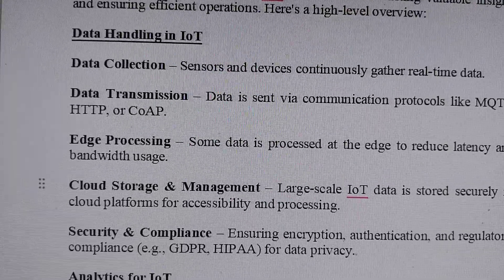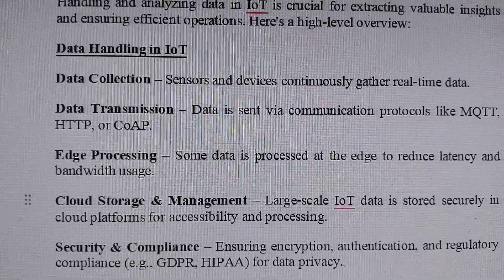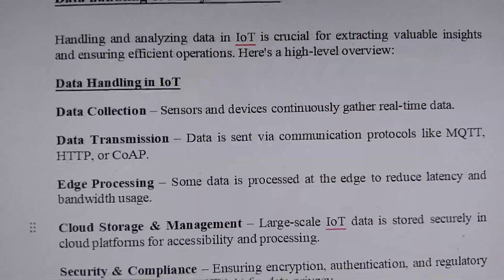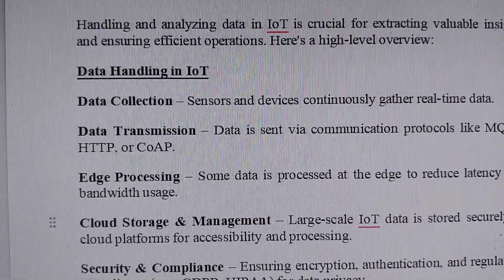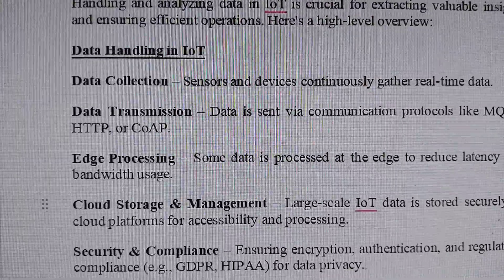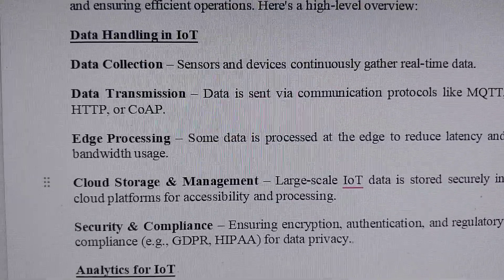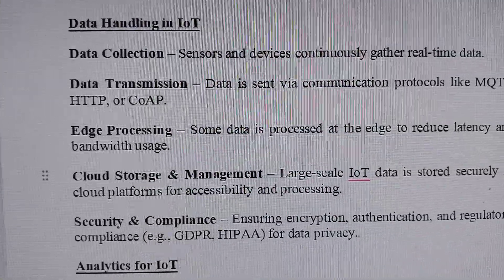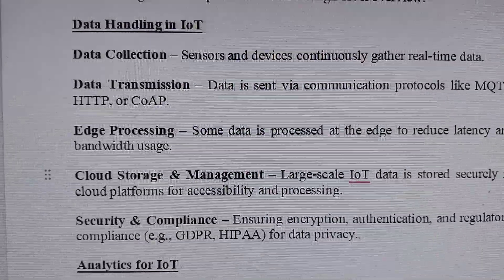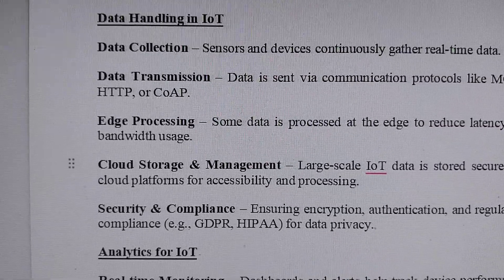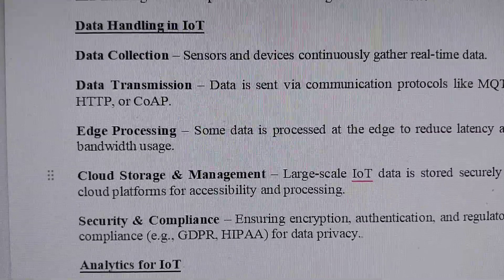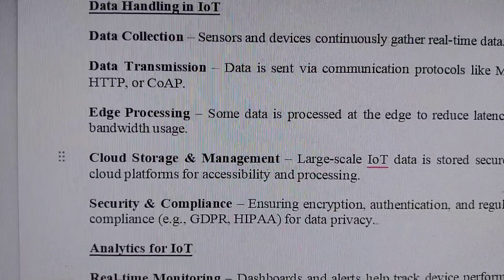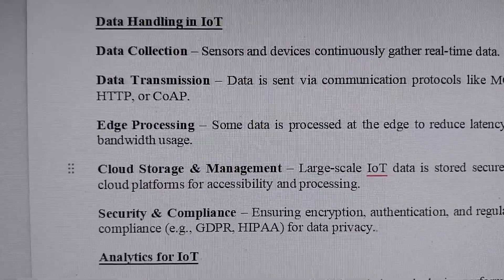Here is a high level overview of how operations will be performed efficiently on large amounts of data. Data handling in IoT generally covers: first, data collection; second, data storage; third, data processing; fourth, security; and the last one is data transmission. These are the several components of how data is handled.